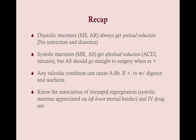One more recap: diastolic murmurs always get diuretics (preload reduction) — that's mitral stenosis and aortic regurgitation. Systolic murmurs — mitral regurgitation and aortic stenosis — always get afterload reduction (ACE inhibitors and nitrates), but aortic stenosis optimal therapy is surgery once symptomatic or once the aortic orifice is less than 0.8 cm². Any valvular condition can cause afib, so treat with digoxin and warfarin if present.